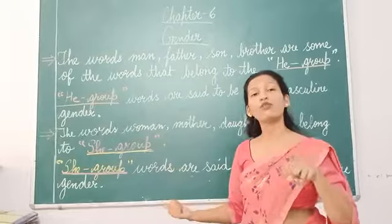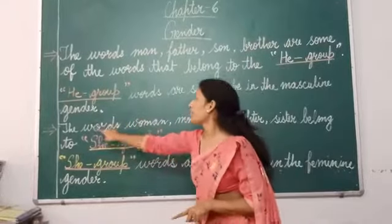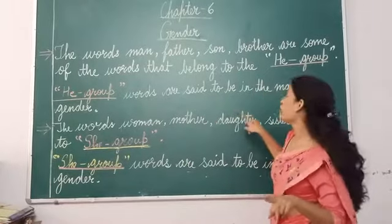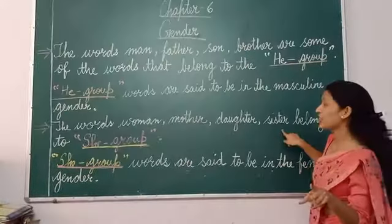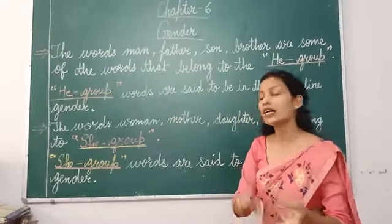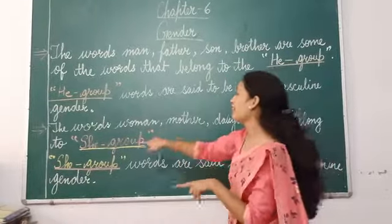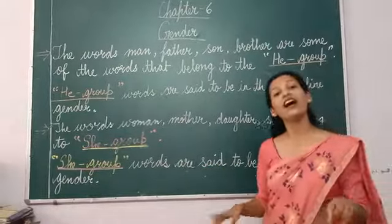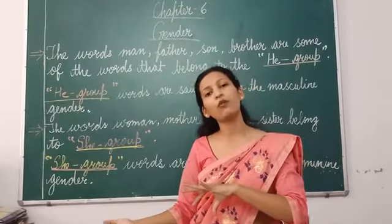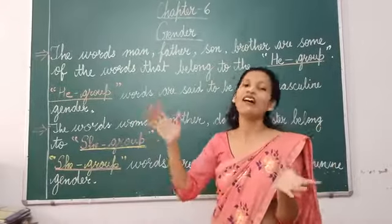Now we move on to our next part, that is feminine gender. So see the words: woman, mother, daughter, sister belong to the she group. Women, mother, sister, aunt, daughter — all these words belong to the she group, and these she group words are said to be in the feminine gender.